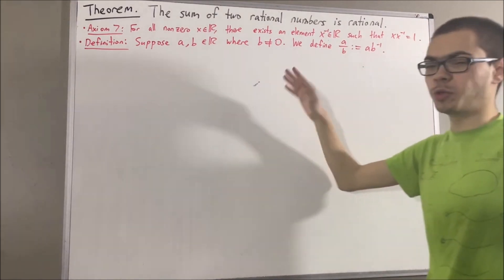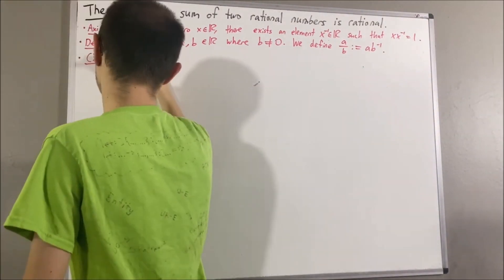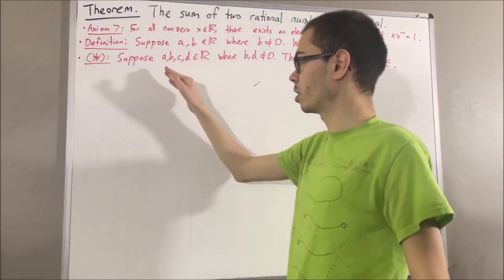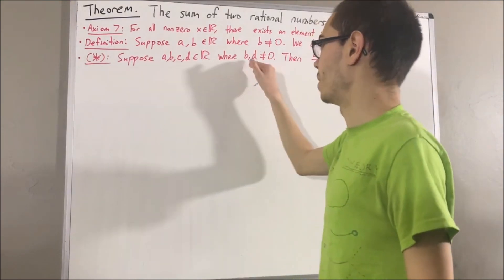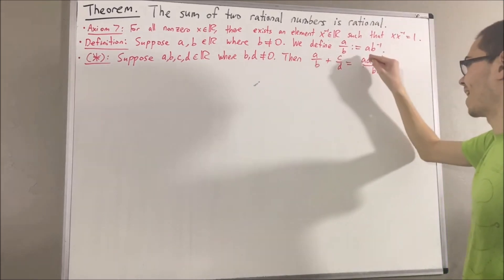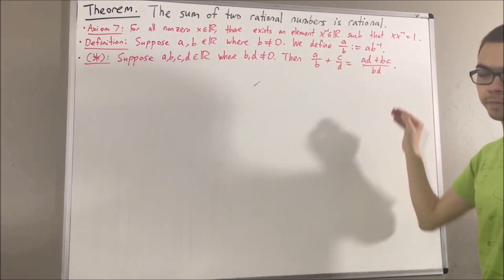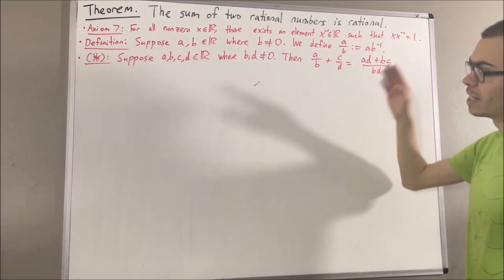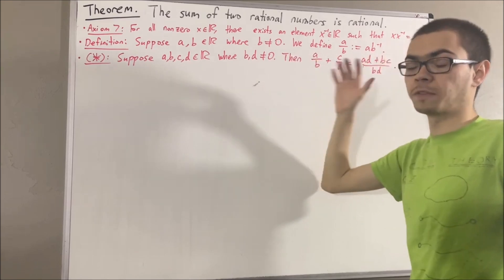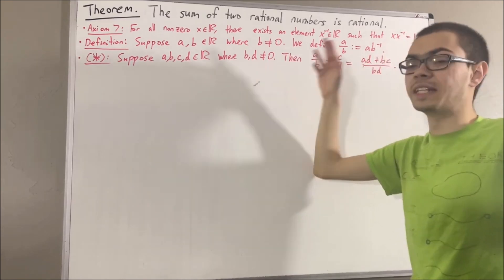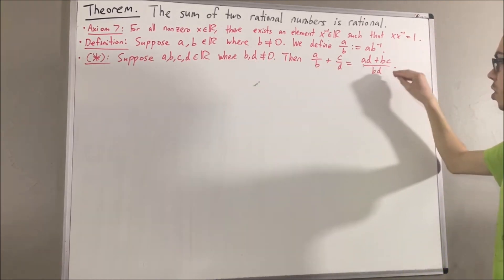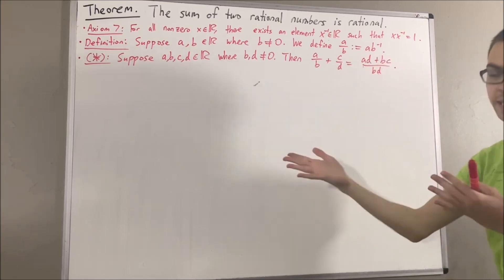We have proven how to add two fractions. Given real numbers a, b, c, and d, where b and d are non-zero, then a over b plus c over d is equal to ad plus bc, all over bd. Since b and d are non-zero, we have long ago proven that the product of two non-zero real numbers is a non-zero real number. So this tells us that b times d is non-zero, and this expression on the right-hand side makes sense.